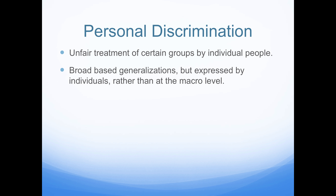This type of discrimination includes biased treatment during face-to-face encounters, avoidance, exclusion, or threats and acts of violence. This kind of personal discrimination receives the most media attention, especially when it's violent and brutal, such as racially motivated hate crimes. It's a blatant kind of behavior that takes place in a way that it can be captured and discussed.